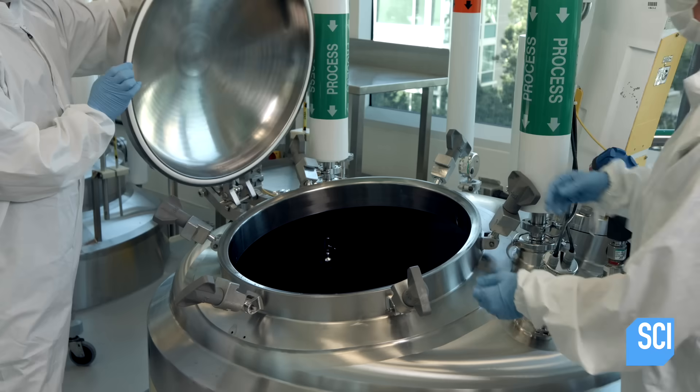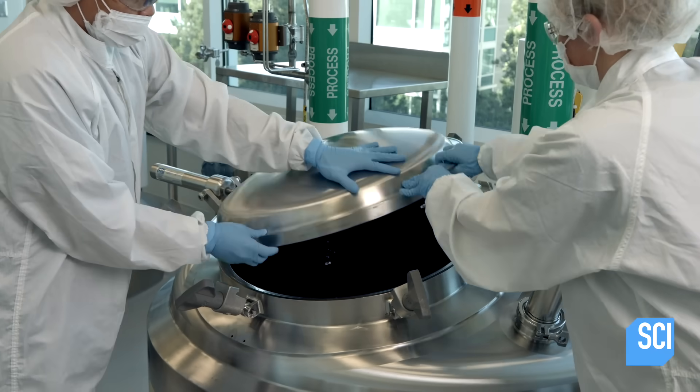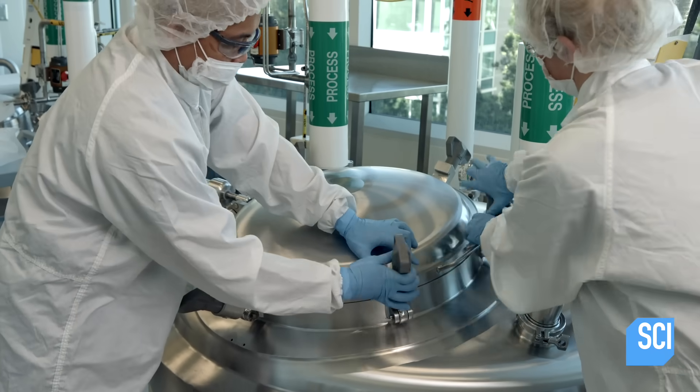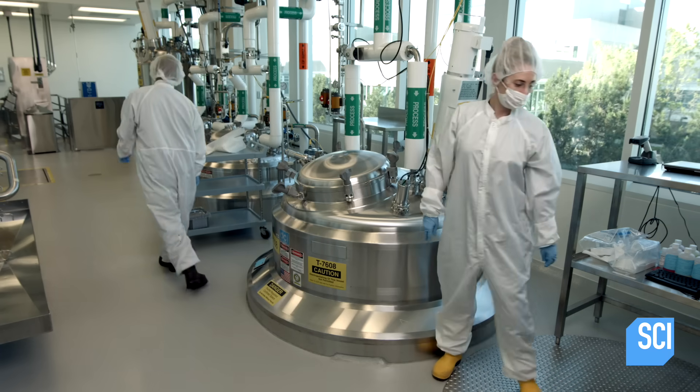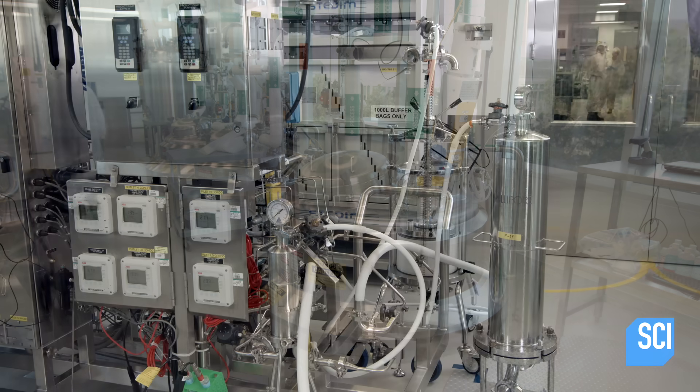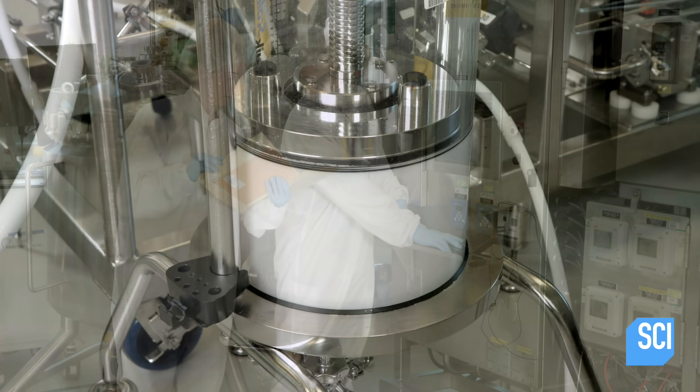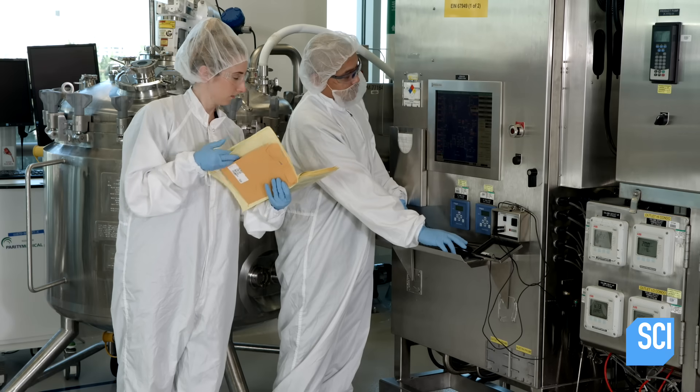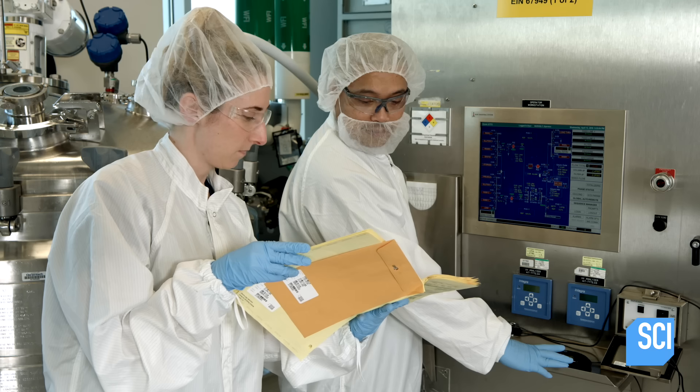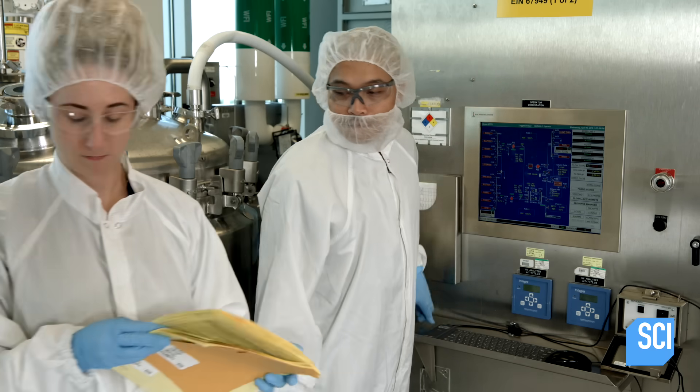An automated system keeps tabs on the condition of the purification solution. After separating cellular material from the protein mixture, the team pumps it through steel and glass columns. Here, the purification solution works with resin beads to separate the protein from the impurities.